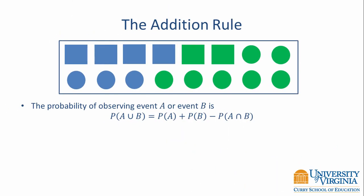Now let's suppose we have two events, event A and event B, and we'd like to know the probability of observing either event A or event B. To make that computation, we need to apply the addition rule, which states that the probability of the union of A and B is equal to the probability of A plus the probability of B, minus the joint probability of A and B.